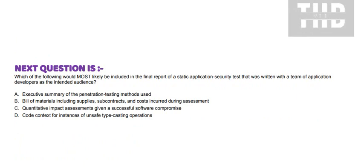Next question is: Which of the following would most likely be included in the final report of a static application security test that was written with a development team as the intended audience? Option A: Executive summary of the penetration testing methods used. Option B: Bill of materials including supplies, subcontracts, and costs incurred during assessment. Option C: Quantitative impact assessments given a successful software compromise. Option D: Code context for instances of unsafe typecasting operations.